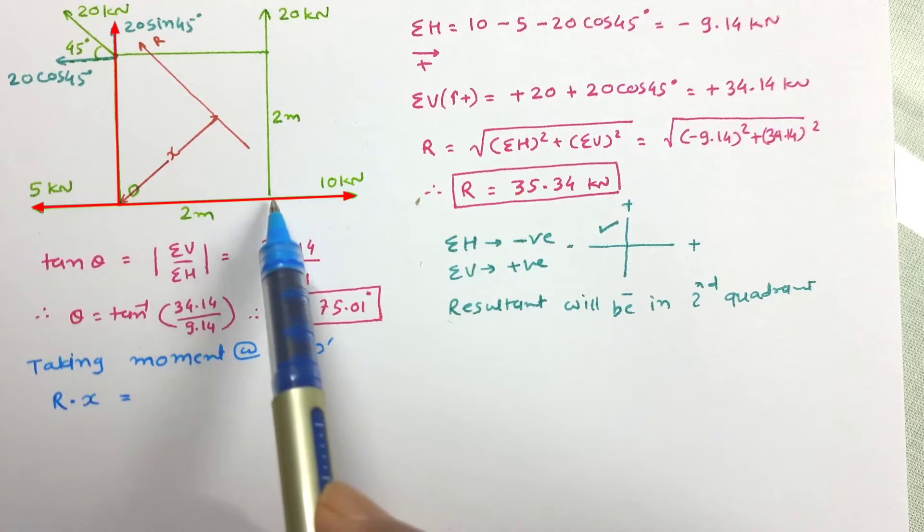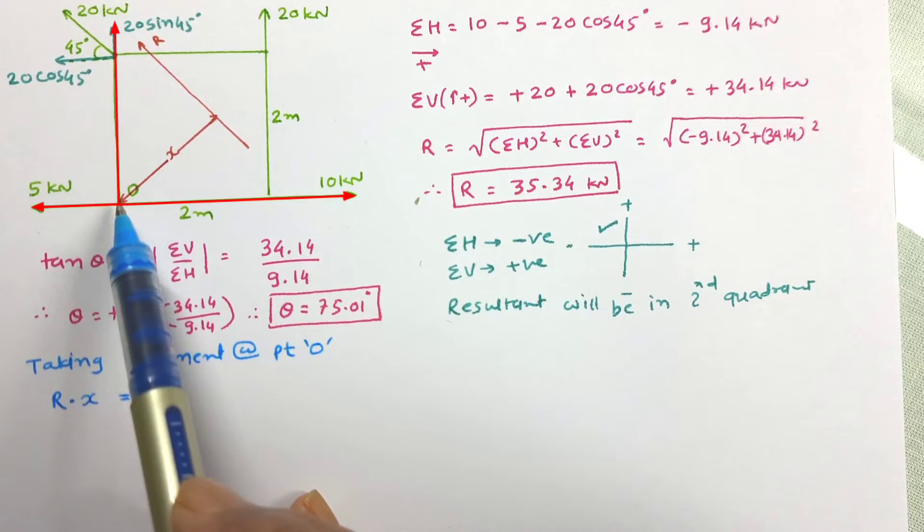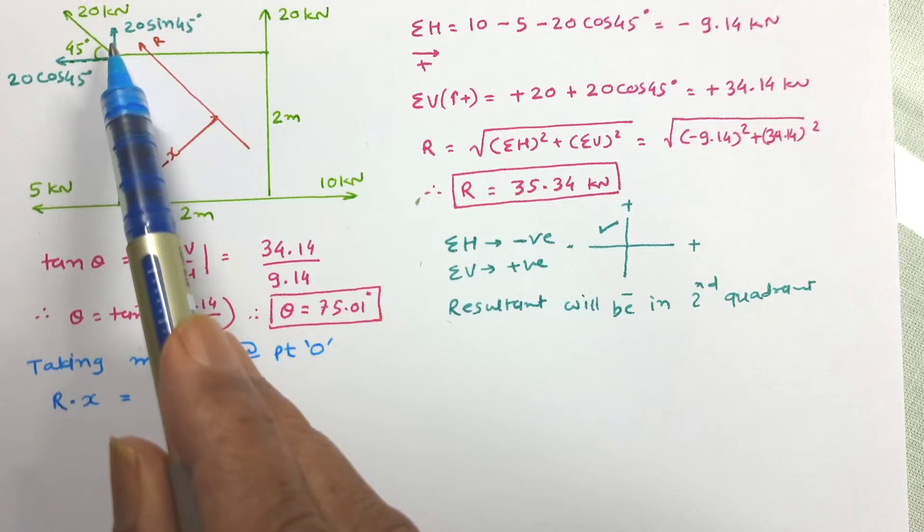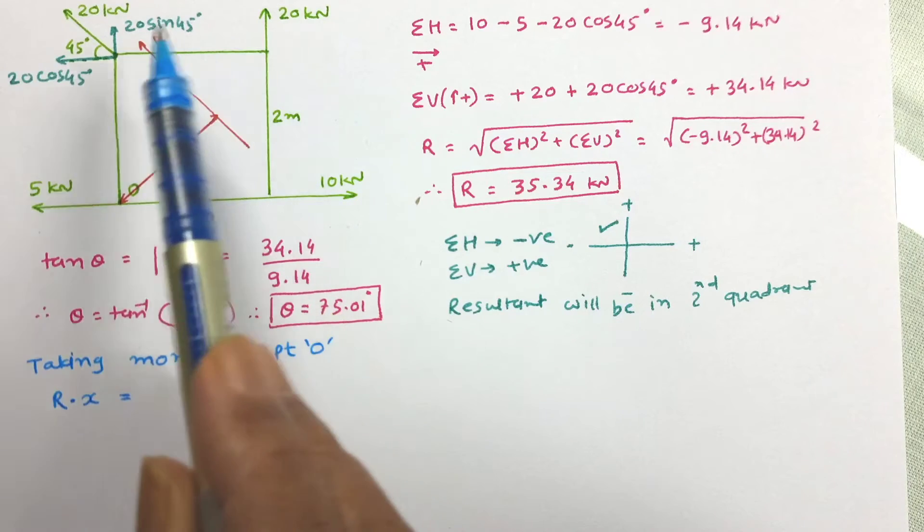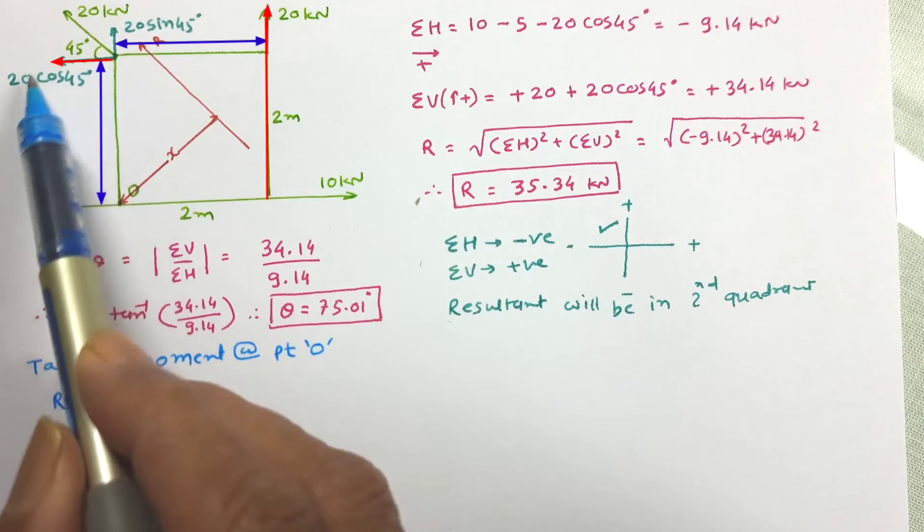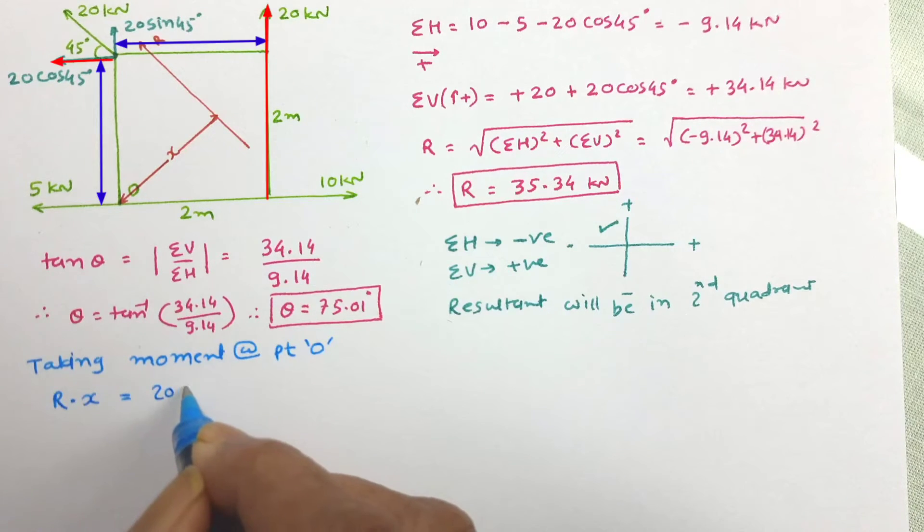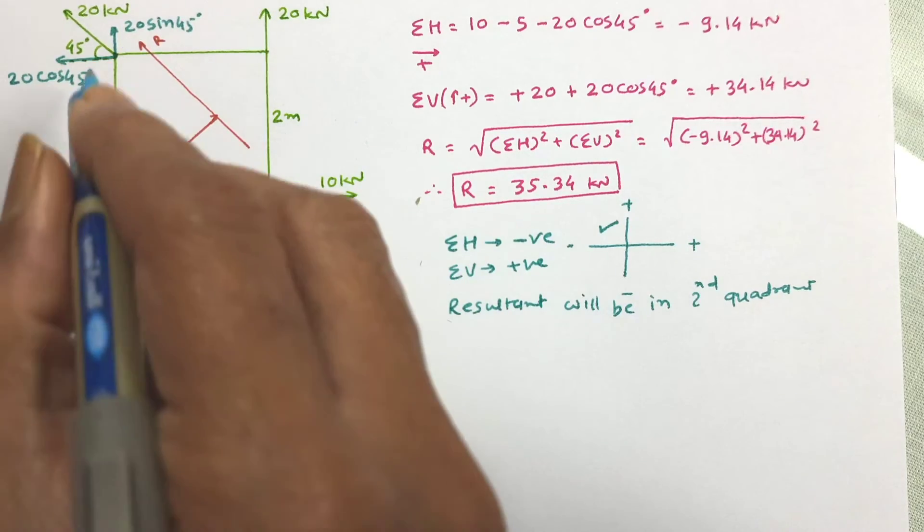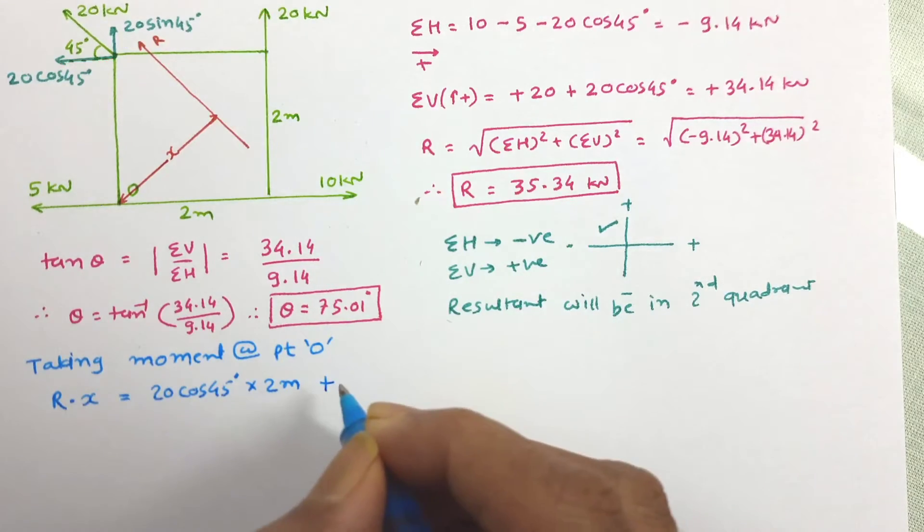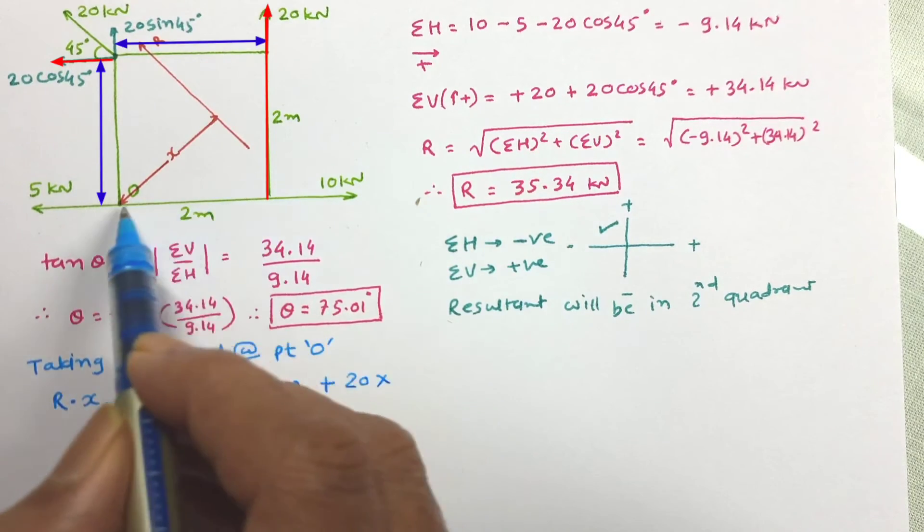5 kN force and 10 kN force are passing from point O, so they will not create any moment. Same way 20 sine 45 is also passing from point O, it will also not cause any moment. Now remaining forces 20 kN and 20 cos 45 will cause moment. This moment is in anticlockwise direction which we have taken positive, so it is 20 cos 45 into perpendicular distance 2 meters. The moment due to this force is also in anticlockwise direction so it will also be positive. Force is 20 kN and distance from point O is 2 meters.